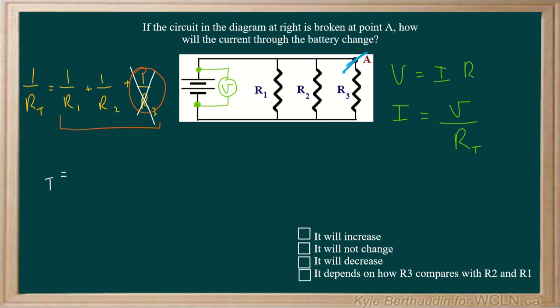Well, if we think about this as 1 over RT, and then we have our 1 over R1 plus 1 over R2 plus 1 over R3, we have some number, but that number has decreased.